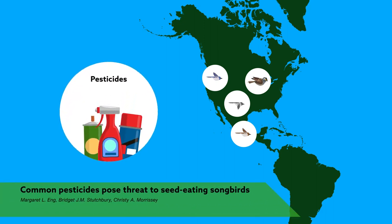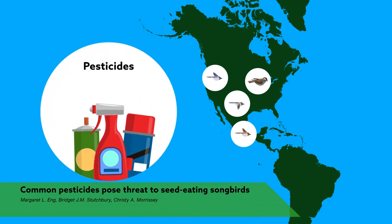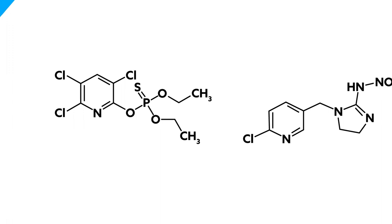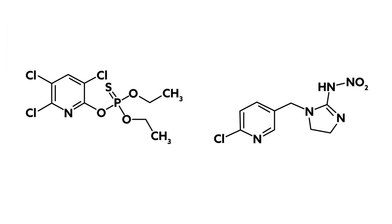A recent study shows that common pesticides could seriously harm and disorient a songbird native to North America. Migratory bird populations across the world are declining. While that trend has been linked to a litany of complex factors, one of the most concerning is the widespread use of common pesticides, namely organophosphates and neonicotinoids.